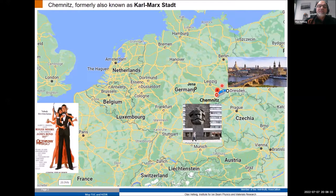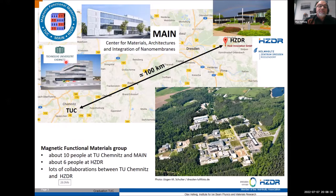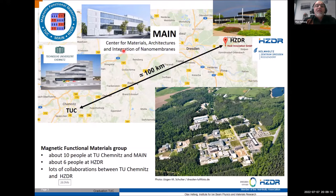I have part of my labs at the Technical University in Chemnitz at the Institute of Physics, and then I drive about 100 kilometers to the other half of my group at the Helmholtz-Zentrum Dresden-Rossendorf, which is a large-scale facility in Germany. We also have a new center at TU Chemnitz called MAIN — the Center for Materials, Architectures and Integration of Nanomembranes — bringing physicists, chemists, engineers, and material scientists together. I have about 10 people at TU Chemnitz and about six at HZDR.